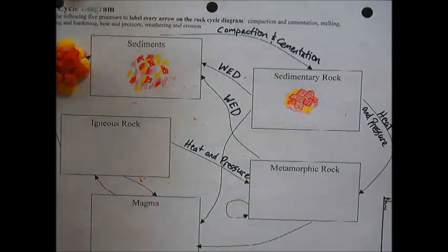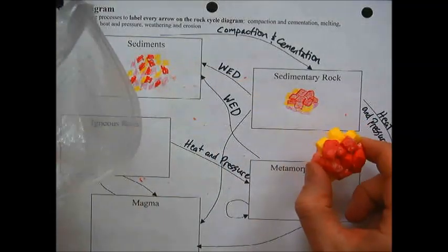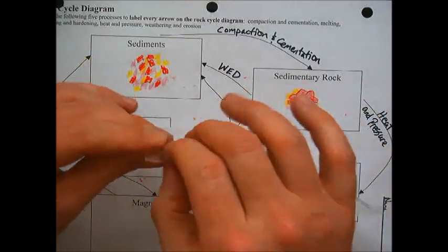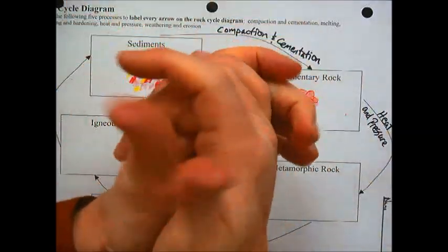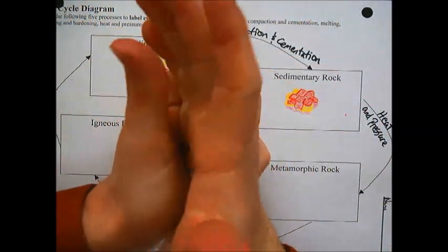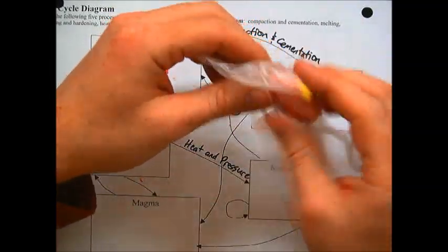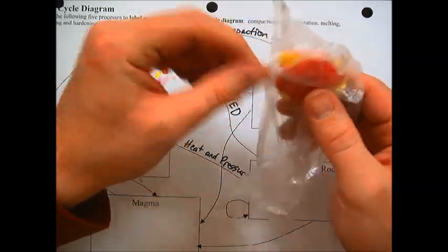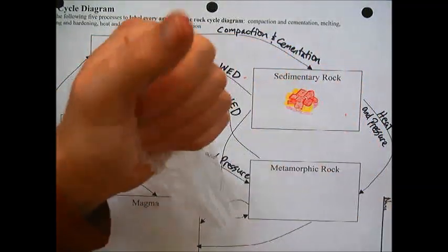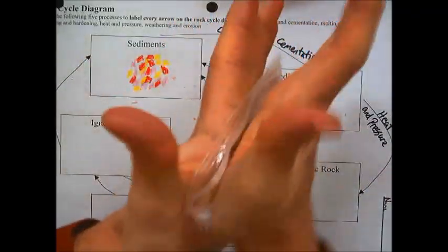In this lab, to show the heat and pressure, I'm going to take my sedimentary rock and put it into a baggie so it's less sticky. Let all the air out and seal it up, then I'm going to rub it between my hands to generate heat. Don't just hold it — get that friction going from the rubbing to get more heat. You want it to be nice and easily bendable and pliable so we can then put some pressure on it.